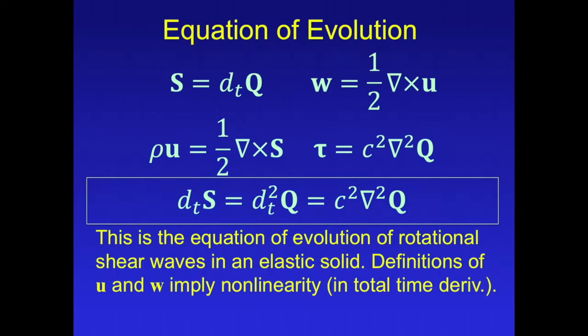So the definitions we have are: spin angular momentum is the total time derivative of a vector potential q. The momentum density is one-half the curl of the spin. The vorticity is one-half the curl of the velocity. And the torque is proportional to the Laplacian of the vector potential q. So this is the equation of evolution of rotational shear waves in an elastic solid. And the definitions of u and w imply non-linearity in the total time derivative.